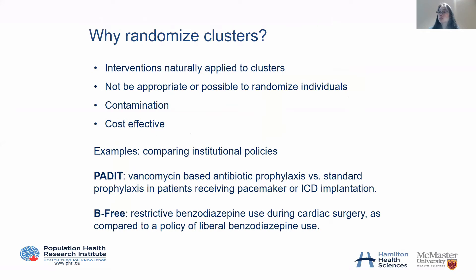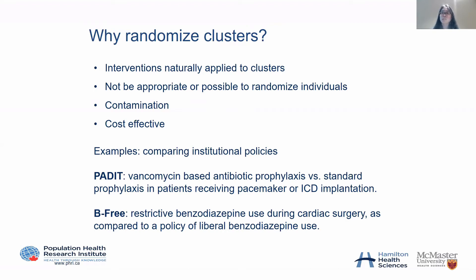Why do we randomize clusters instead of individual patients? Usually the intervention is more naturally applied at the cluster level — such as healthcare systems, healthcare policies, or guidelines — where it would not be appropriate or possible to randomize individuals. Also, to avoid contamination: if a new guideline is implemented in a clinic, it is harder for a physician to apply the new guideline to some patients and the old guideline to others, and it may not be ethical to treat patients differently.